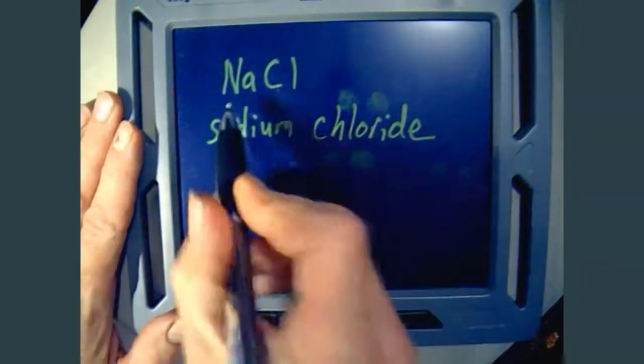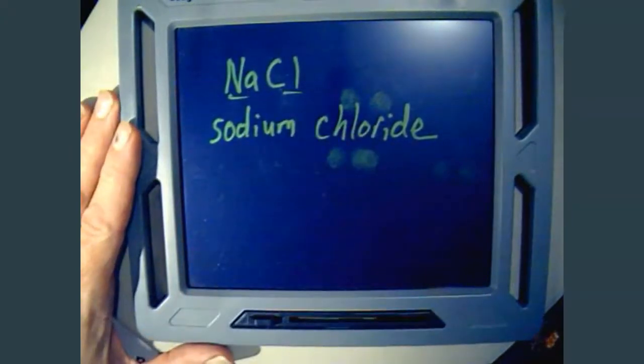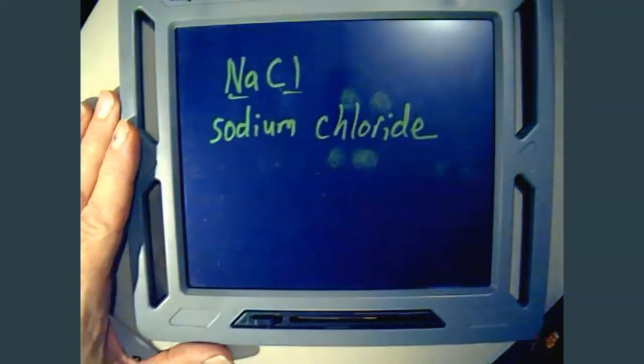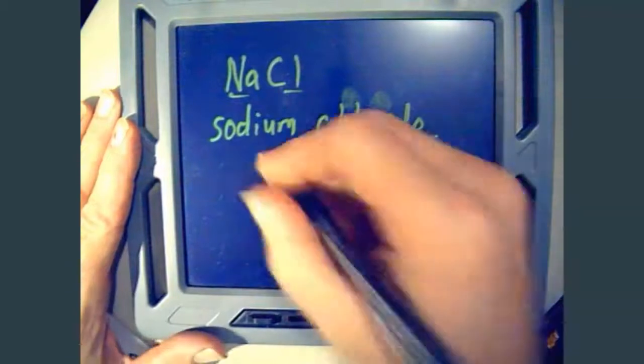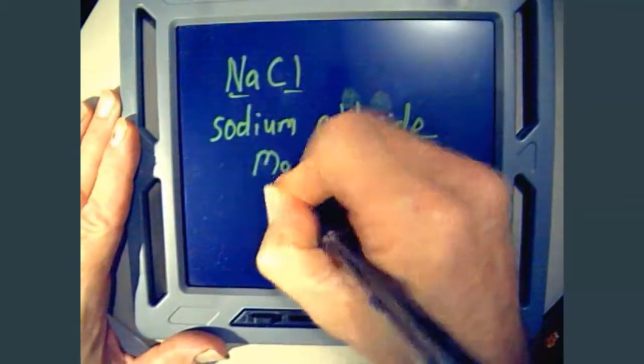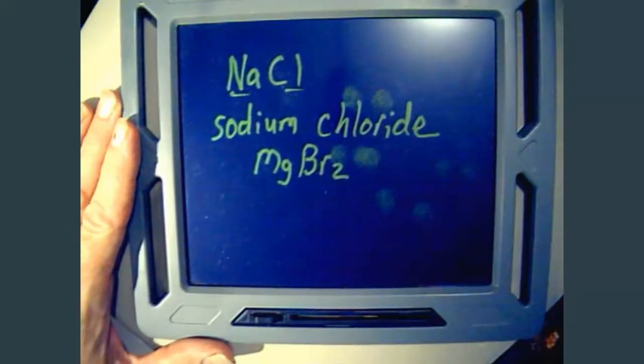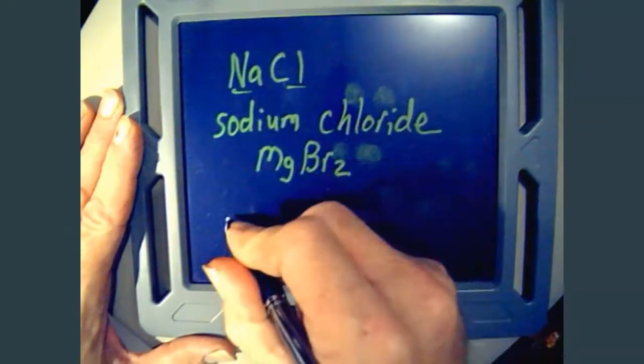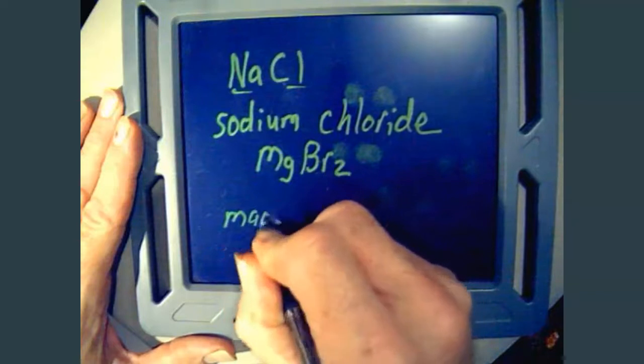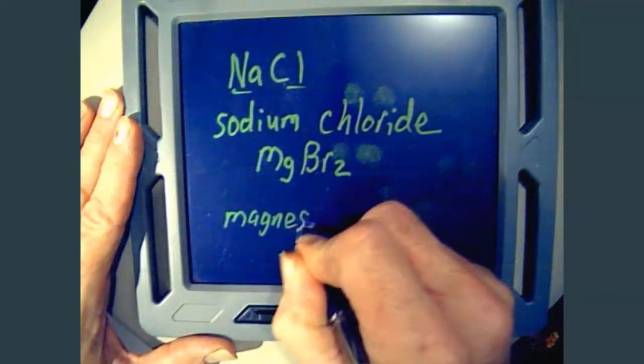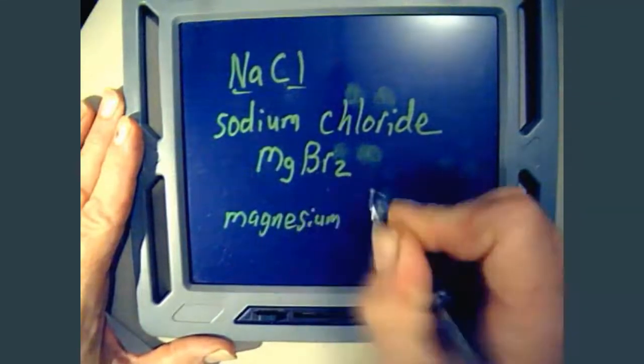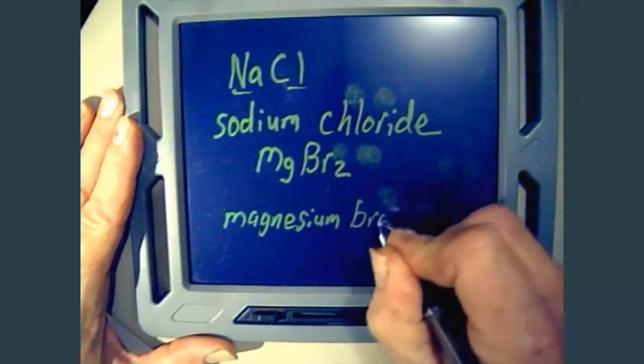So you simply name the cation first, the anion second, change the ending then to -ide. If we had MgBr2, well that would be called Mg is magnesium, always forms a 2 positive charge. Br is bromine, so it becomes bromide.